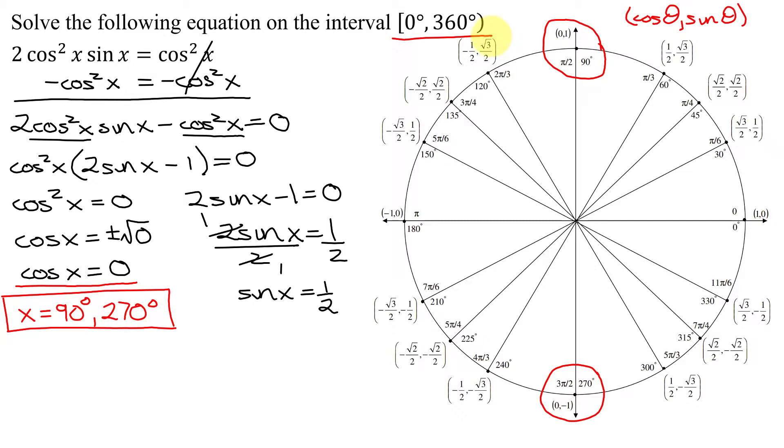Now, the second set of solutions come from the sine of x equals a half. So since this is the sine function, it's going to be the y-coordinate. I need the y to be positive a half. That means it's going to be above the x-axis.